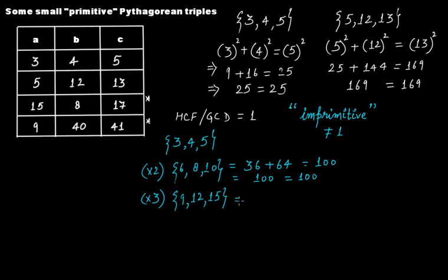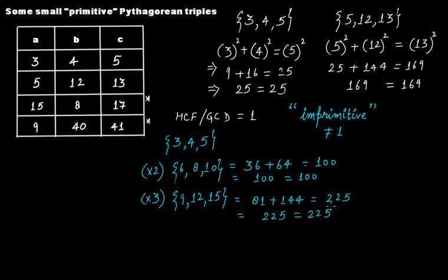To verify 9, 12, 15: 9 squared is 81, plus 144 equals 225, and 15 squared is also 225. So 225 equals 225 — yes, these three are Pythagorean triples, but since the highest common factor is 3 and not 1, it makes them imprimitive Pythagorean triples.